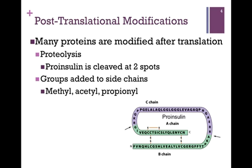Proteins are also modified in other ways. We've learned in previous studies that proteins may be modified by proteolysis. A good example of that is proinsulin, shown on the lower right of the screen. It is called proinsulin because it's the initial polypeptide, but it is cleaved at two spots marked by the black arrows to produce the final insulin hormone.